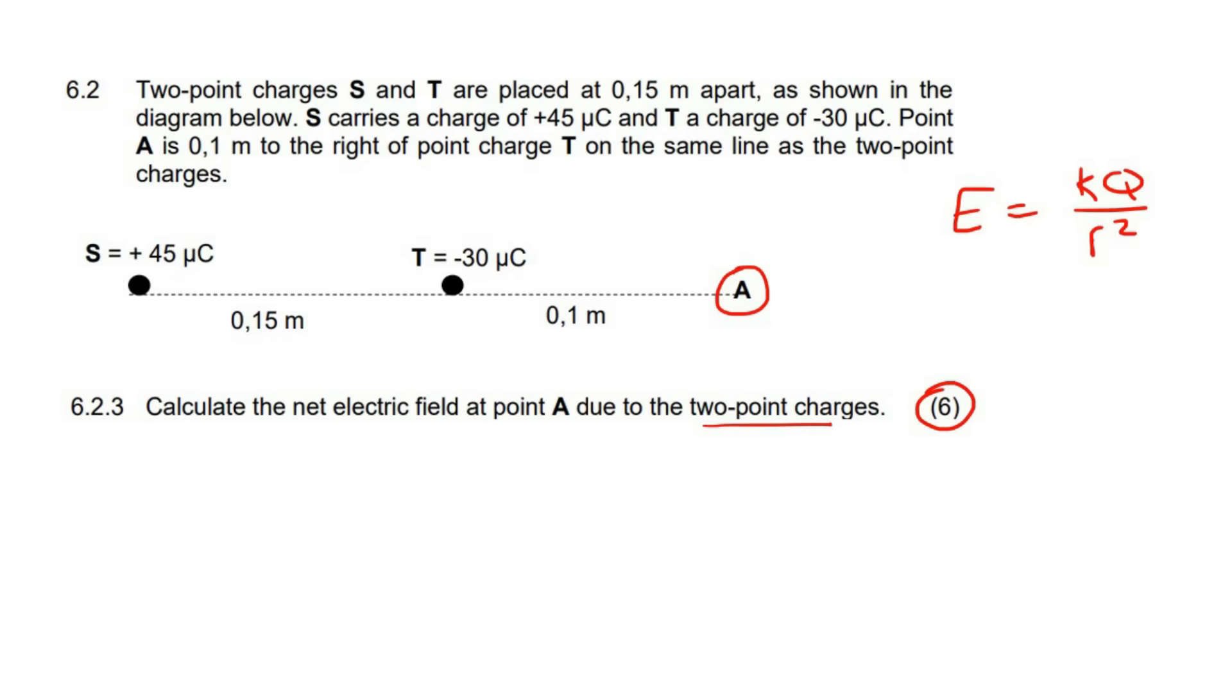So you're going to use this formula over here. And all you do is the following. You're going to start with one of these, either S or T. So let's start with S. Now you're not going to look at S to T. That is not what we're doing. This question is all about A. So you're going to look at that electric field over there. So let's go use our formula. KQ over R squared. So that's going to be nine times ten to the nine.